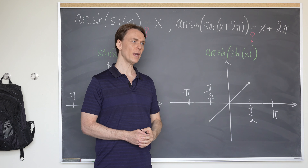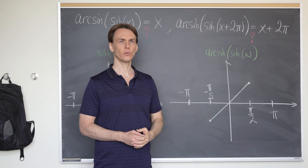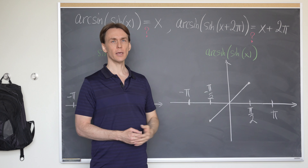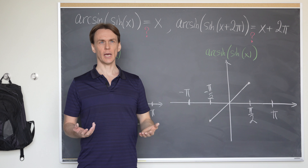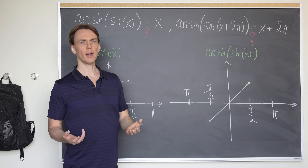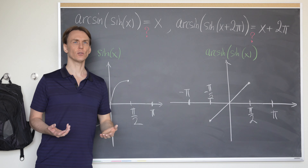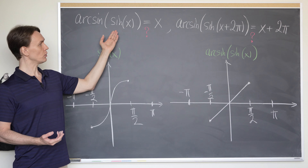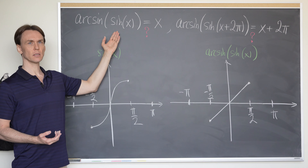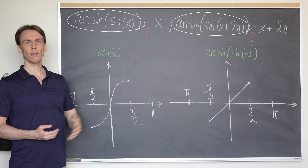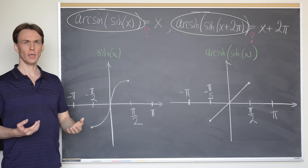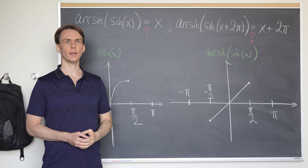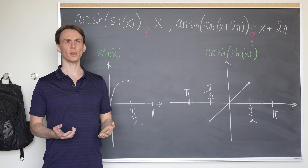But on the other hand, notice that sine of x plus 2π — because sine is a periodic function with period 2π — it's actually equal to sine of x. So these two functions should be equal to each other, right? So what's going on here?